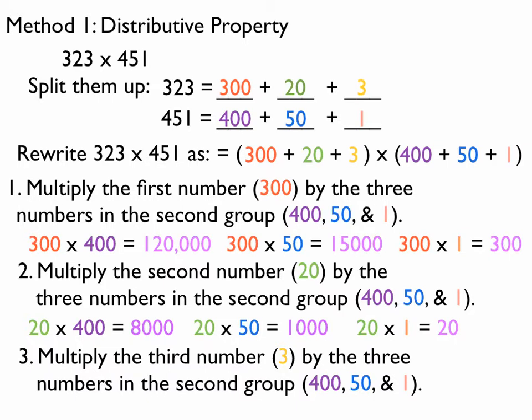Step 3, multiply the third number, 3 in this case, by the three numbers in the second group, still 400, 50, and 1. So, I'm going to get 3 times 400 is 1,200. 3 times 50 is 150. And 3 times 1 is just equal to 3.